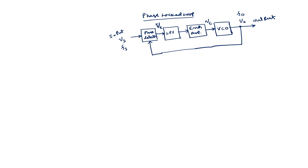We can construct this phase locked loop using discrete components such as the phase detector, low pass filter, error amplifier and VCO. The phase detector can be constructed using either discrete components or direct ICs. Similarly, for the low pass filter we can use an IC or discrete components, same for the error amplifier and VCO. The phase locked loop is also available in IC form.